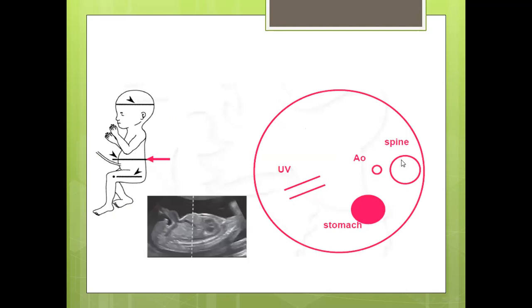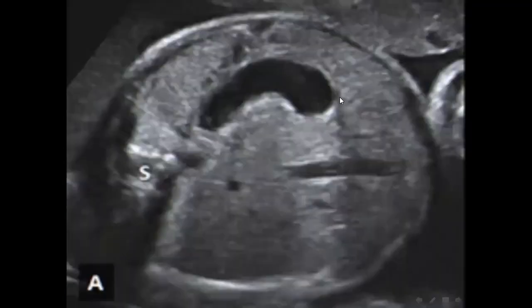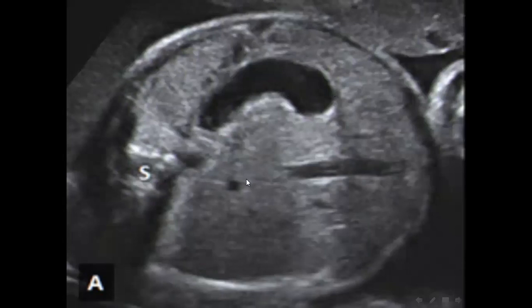Looking at this picture: this is the spine, this is the descending aorta, this is the intrahepatic umbilical vein, this is the stomach, and this is the cut section just above the umbilical — the ideal cut section for abdominal circumference. In the next picture, the spine is at nine o'clock, and we can identify the descending aorta, the short intrahepatic umbilical vein, and the stomach. This is a circular section with an unbroken rib echo — this is the ideal position to measure abdominal circumference.